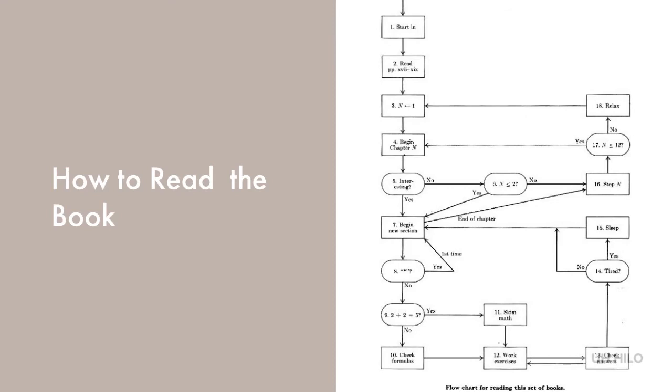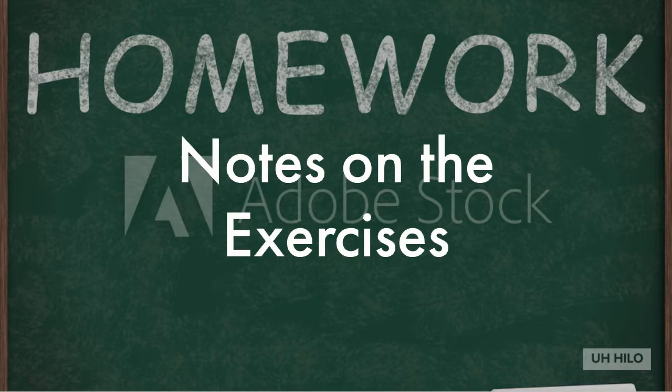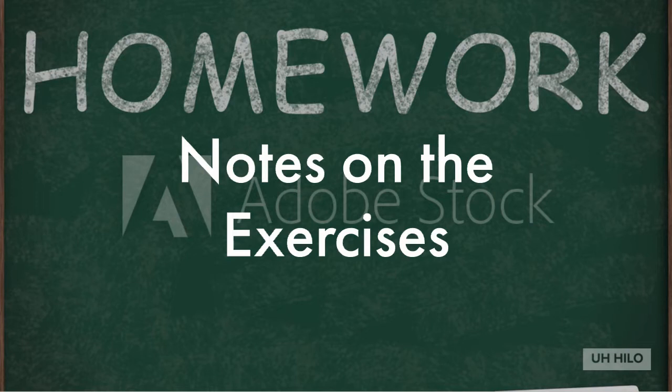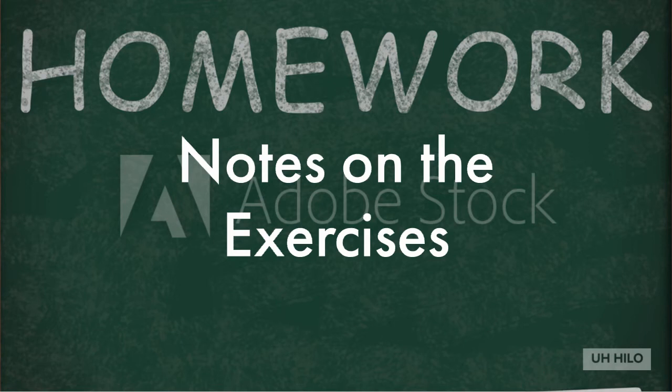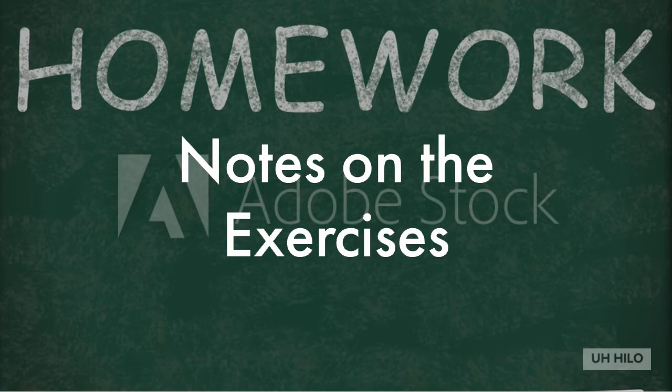The exercises in the book are also well-structured and exceedingly detailed. Problems range from trivial to long-term research problems and are given by a two-digit rating. A rating of 00 is an extremely easy exercise that can be answered immediately if the material has been understood — these can be worked out in your head. Problems in the 10 range are simple problems that make you think over the material you've just read, but they're by no means difficult.